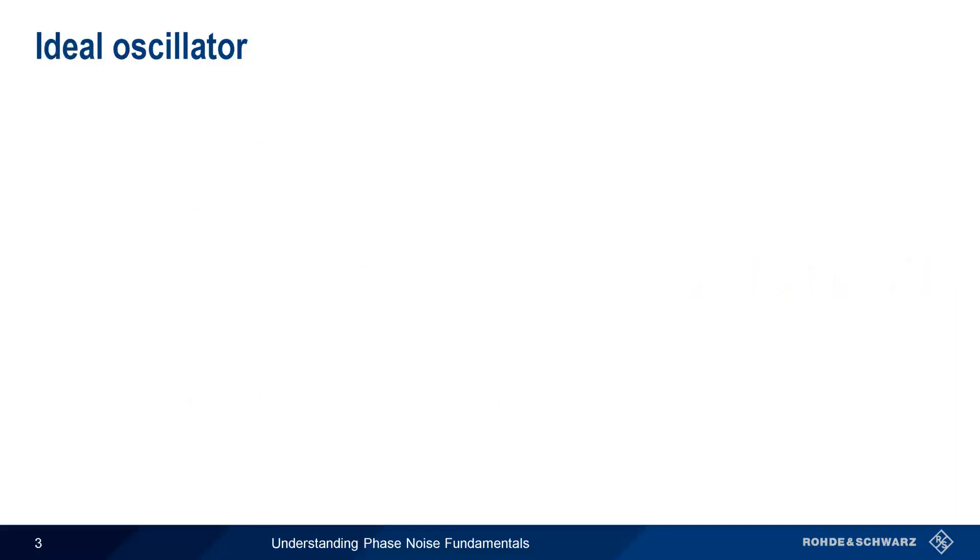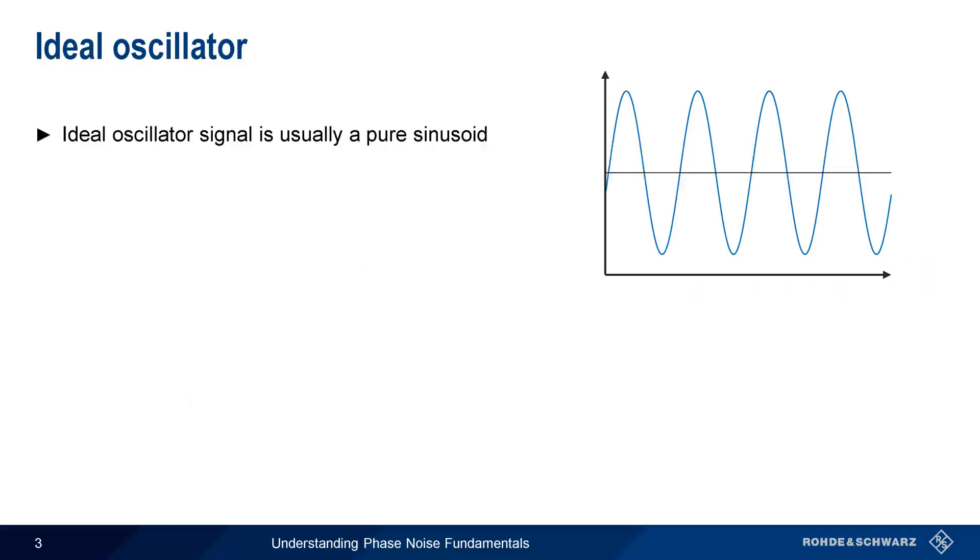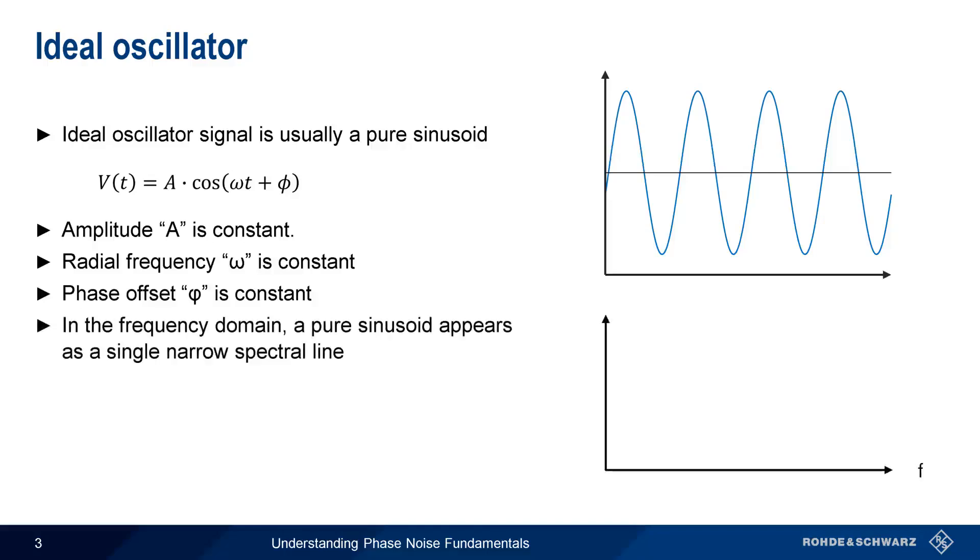The output of an ideal oscillator is usually a purely sinusoidal signal, which we can describe mathematically as V(t) equals A(t) cosine omega t plus phi(t). In this equation, A, the amplitude of the sinusoid, is a constant. Omega, the radial frequency, and phi, the phase shift or phase offset, are also constant. If we look at this ideal signal in the frequency domain, our pure sinusoid would appear as a single narrow spectral line, with all of its power at one single frequency.